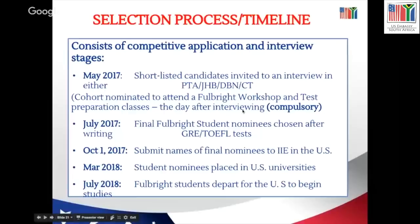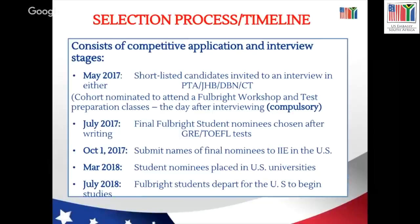Regarding the selection process and timeline: in May 2017, shortlisted candidates will be invited to an interview in one of these cities — Pretoria, Johannesburg, Durban, or Cape Town. Once nominated, a semi-final cohort will attend a Fulbright workshop and test preparation class the day after the interviews — that's compulsory. If you are called for an interview, you must be available on the interview day and the following day. It's not negotiable; if you cannot make it, you lose your place in the selection process.